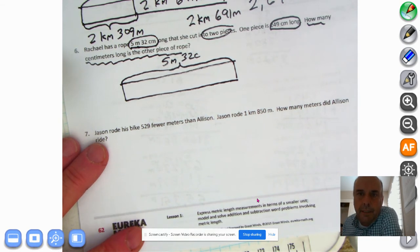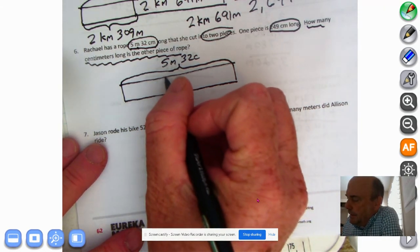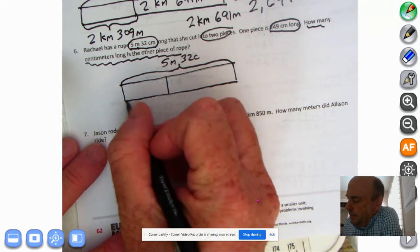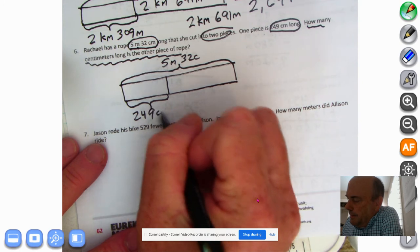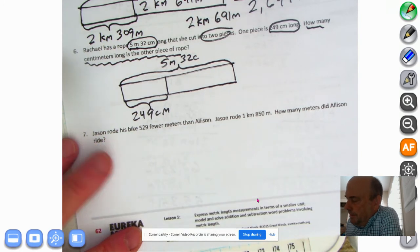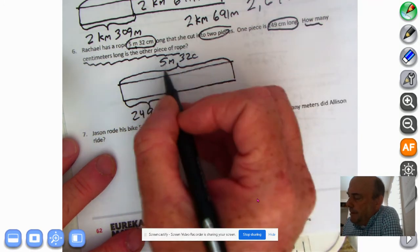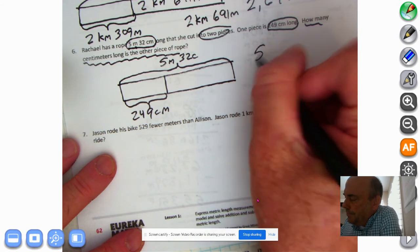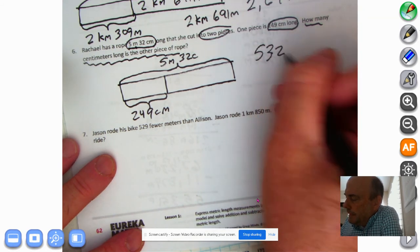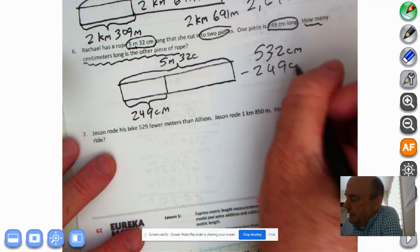So she cut it into two pieces. And one piece was 249 centimeters long. The simplifying strategy I'm going to use here is I'm just going to convert this to centimeters. So 5 meters would be 500 centimeters, 532 centimeters minus 249 centimeters.